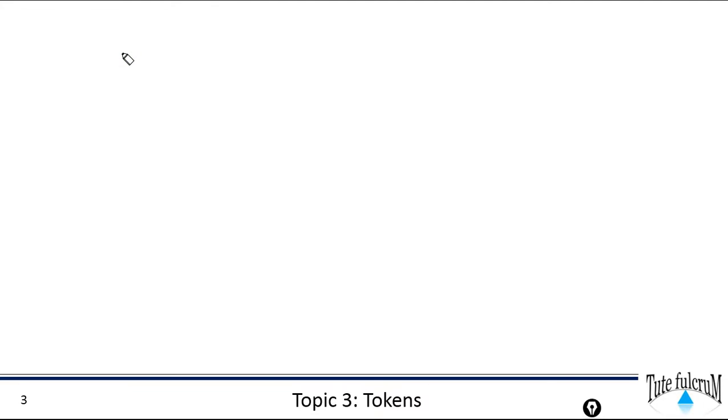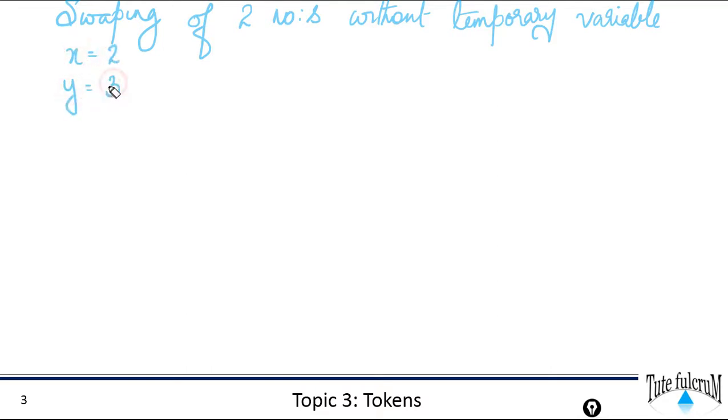Let's take one more problem where our bitwise XOR operator gives an efficient solution. Our problem is we need to swap two numbers without using a temporary variable. So let's say we have X equal to 2 and Y equal to 3. You need to swap them. So swapping means interchanging. So after you swap them, you should get the output as X equal to 3 and Y equal to 2. The bitwise XOR operator is used efficiently to swap these two numbers without using a temporary variable.